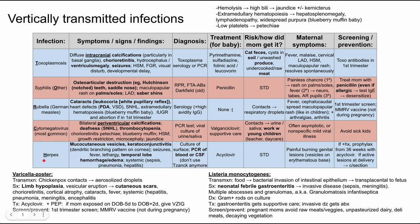The last of the TORCH infections is herpes. Defining features include mucocutaneous vesicles similar to adult herpes, and keratoconjunctivitis — specifically a dendritic branching pattern on the cornea. The baby can also have seizures, fever, lethargy, temporal lobe hemorrhage and edema, and systemic signs like sepsis, pneumonia, and hepatitis. For diagnosis, you can culture one of the vesicles. More commonly, PCR of blood or CSF is done. The Tzanck prep was historically used but is no longer the right answer.